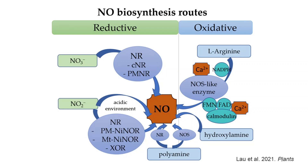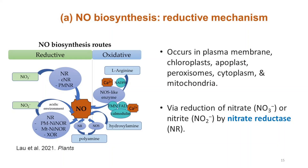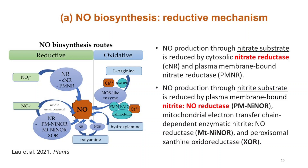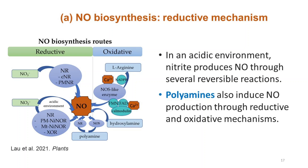Lau et al. in 2021 have used a figure to summarize these pathways. The nitric oxide reductive synthesis mechanism mostly occurs in the plasma membrane, chloroplasts, apoplasts, peroxisomes, cytoplasm, and mitochondria, through reduction of nitrate or nitrite by nitrate reductase. Nitric oxide production through nitrate substrate is reduced by cytosolic nitrate reductase and plasma membrane-bound nitrate reductase, whereas nitric oxide production through nitrite substrate is reduced by plasma membrane-bound nitrate/nitric oxide reductase, the mitochondrial electron-transfer chain-dependent enzymatic nitrate/nitric oxide reductase, and peroxysomal xanthine oxidoreductase. In an acidic environment, nitrite produces nitric oxide through several reversible reactions.